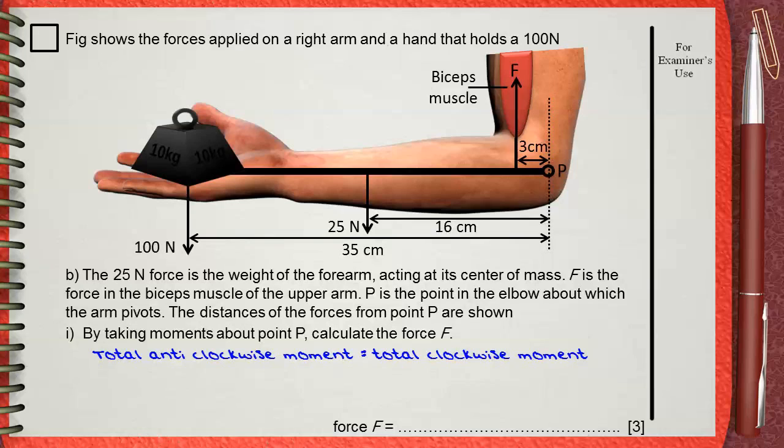Two forces will cause an anticlockwise moment: the 100 newtons and the 25 newtons. So we can say that 100 times 35 (35 is the distance between 100 newtons and the pivot P) plus 25 times 16 (16 is the distance between 25 newtons and the pivot P) gives the total anticlockwise moment.